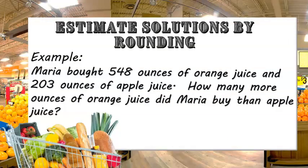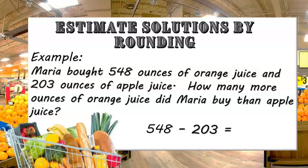Let's check out this word problem. Maria bought 548 ounces of orange juice and 203 ounces of apple juice. How many more ounces of orange juice did Maria buy than apple juice? Well, to solve this, I would have to subtract 548 minus 203.